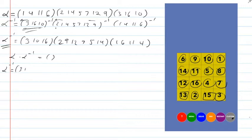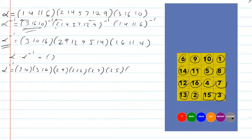From what I've seen before, I can change (3, 10, 16) to (3, 10), (3, 16). And I could change (2, 9, 12, 7, 5, 14) to (2, 9), (2, 12), (2, 7), (2, 5), (2, 14). And I could change (1, 6, 11, 4) to (1, 6), (1, 11), (1, 4).